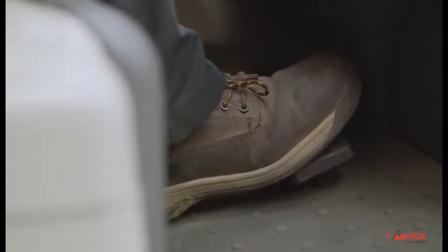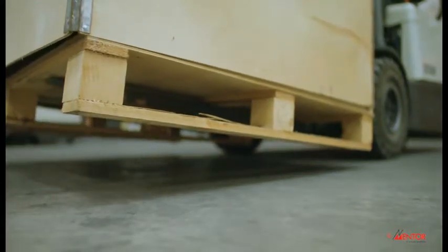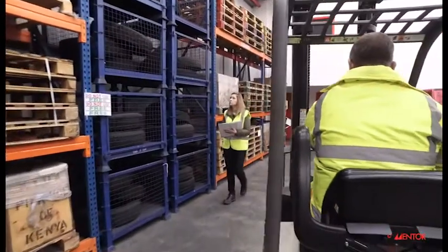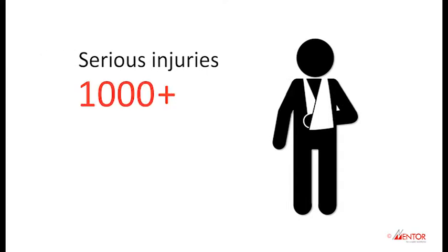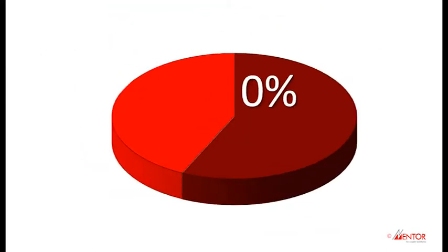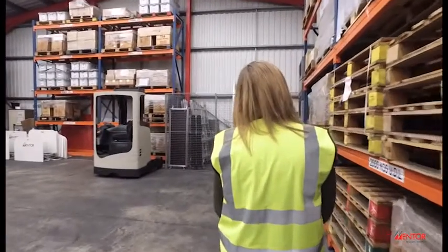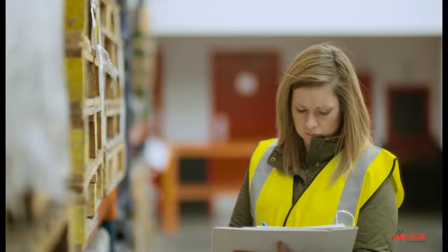Parts of this video are designed to be hard hitting, and we will show footage of real forklift truck accidents. The aim of this isn't just to shock you, but to raise awareness of the serious consequences when FLTs are not operated correctly. There are over 1,000 serious injuries every year involving forklift trucks. In nearly 60% of the cases, the injury is a result of a pedestrian being struck by a forklift truck. As pedestrians working around moving vehicles, there is the risk that you could be involved in a serious incident, and because of this, you need to take responsibility for your actions.